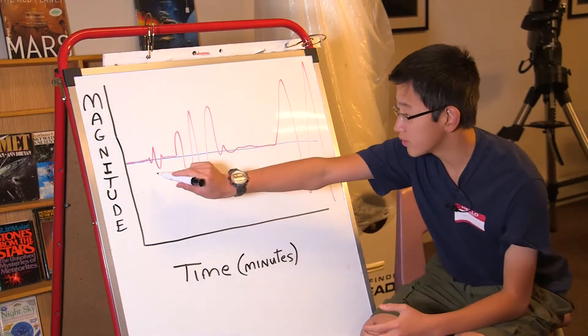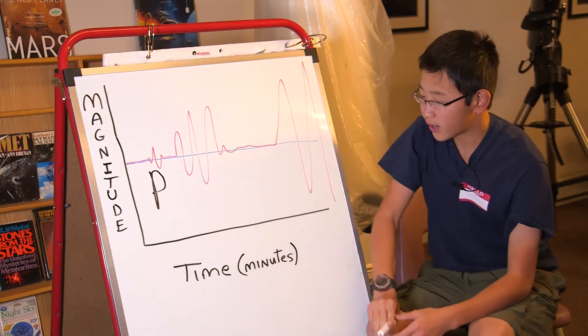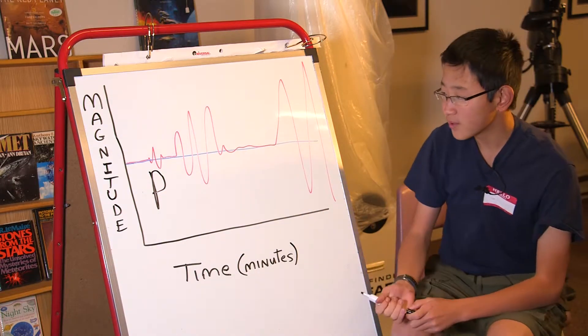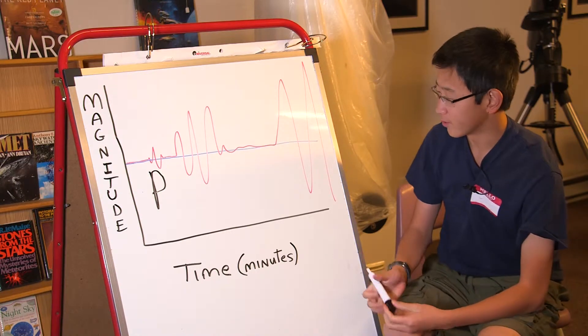The P waves are over here. They're the first waves. Nobody ever feels them except for apparently animals, which is why they start acting weird right before an earthquake.